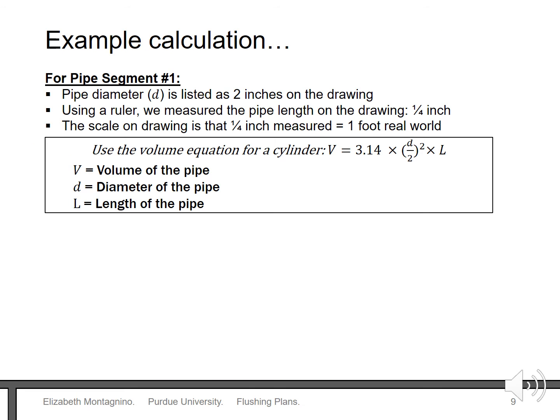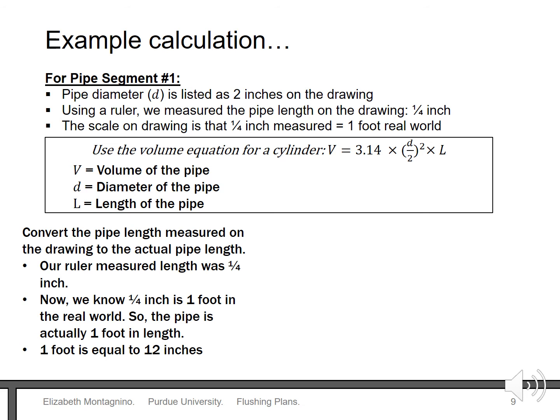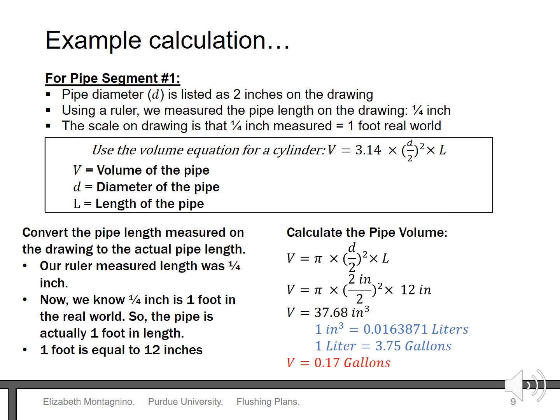Here's an example calculation for the volume of water in a pipe. The as-built drawing indicated the pipe diameter is two inches. We measured the pipe segment was a quarter inch using a ruler, and the drawing scale says that a quarter inch translates to a real-world one-foot-long pipe. So we have a two-inch diameter, one-foot-long pipe — or equivalently, two-inch diameter and 12 inches long. Now we use the equation to calculate the water volume. The letter d is the diameter, l is the pipe length, and the π symbol is pi, approximately 3.14. Working through the calculation, the volume of water in the pipe is 37.68 cubic inches. Converting to gallons, a two-inch diameter one-foot-long pipe contains 0.17 gallons of water.